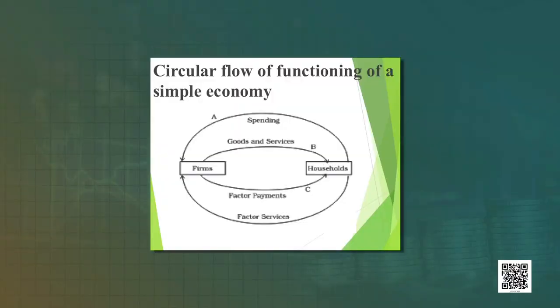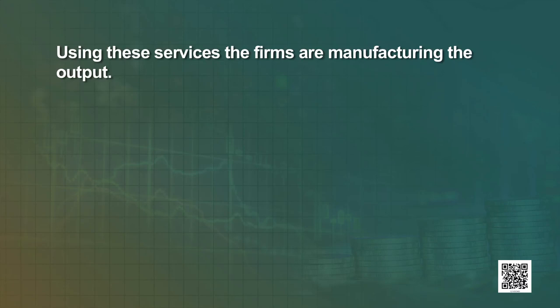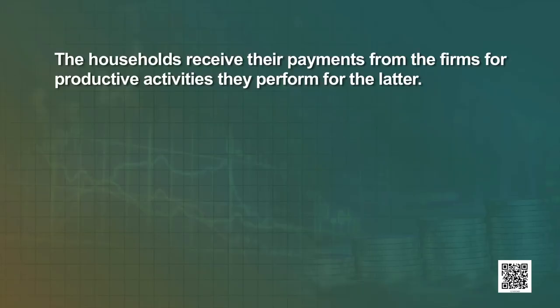The arrow above represents the flow of payments for the goods and services. The two arrows at the bottom of the diagram similarly represent the factors of production market. The lowermost arrow going from the households to the firms symbolizes the services that the households are rendering to the firms. Using these services, the firms are manufacturing the output. The arrow above, going from the firms to the households, represents the payments made by the firms to the households for the services provided by the latter. The firms' demand for factors of production to run the production process creates payments to the public.